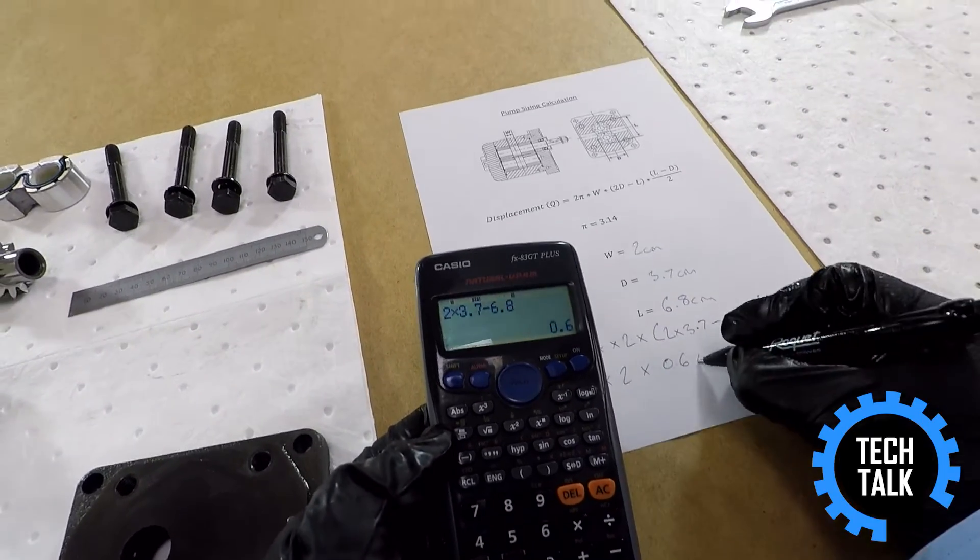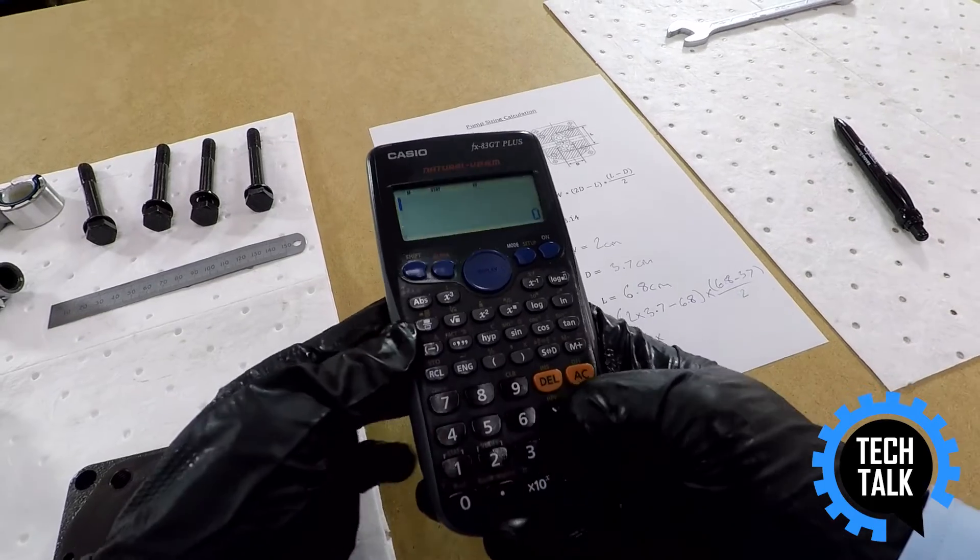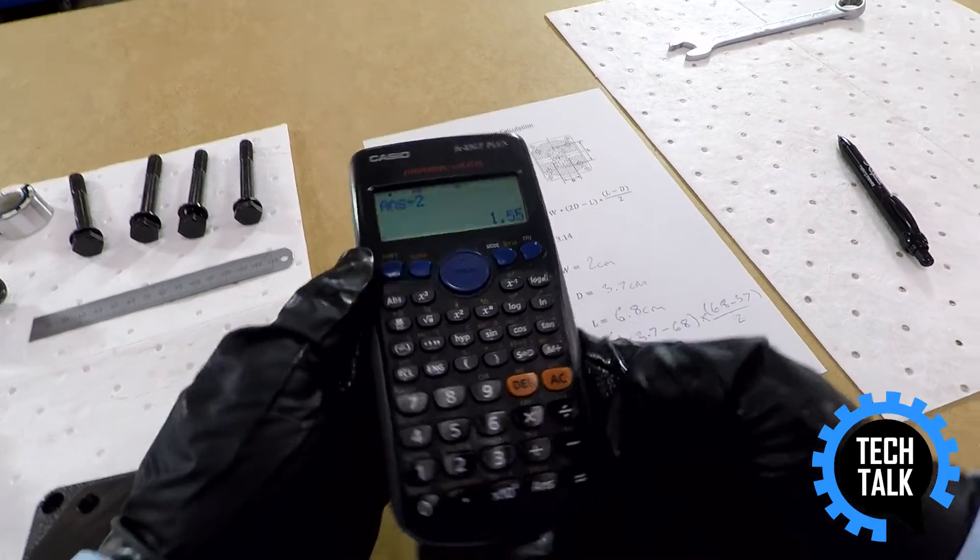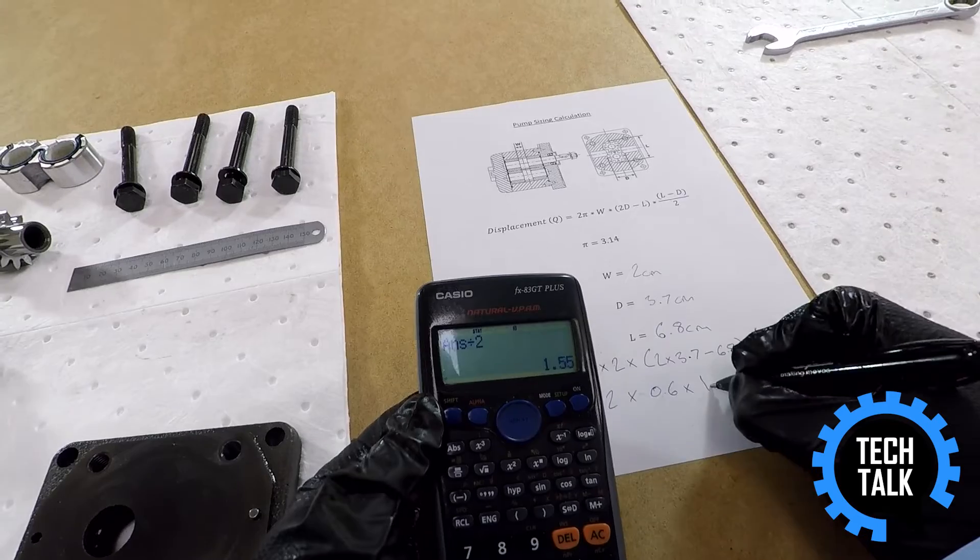And finally multiplied by 6.8 minus 3.7 divided by 2, which is 1.55.